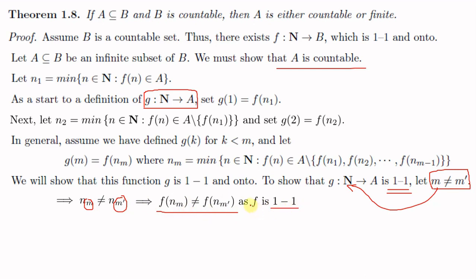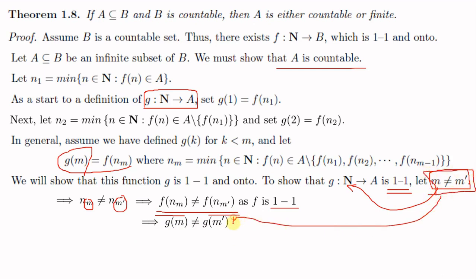By the definition of a one-to-one function, we know that a function f from A to B is one-to-one if a not equal to b in the set A implies that f(a) not equal to f(b). Now f(nm) equals g(m), so replacing f(nm) by g(m) and f(nm') by g(m'), we get g(m) not equal to g(m'). We started by saying m not equal to m', and what we got is g(m) not equal to g(m'). So this implies that g is one-to-one.